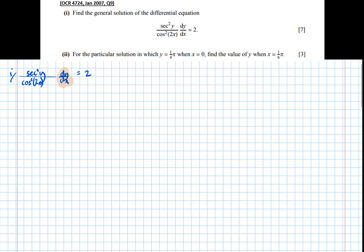So we're going to do this by multiplying by dx. So copying it out again, or rather, going to the next line: sec squared y over cos squared of 2x dy, remember we've times by dx, which takes the dx to the other side, equals 2.